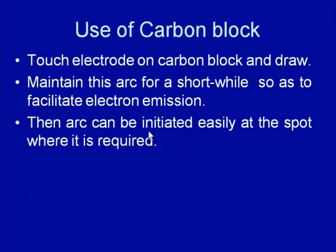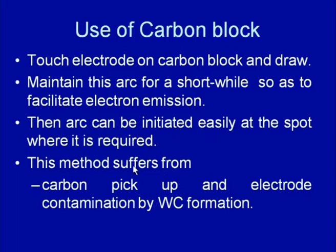Once electrons are emitted, the arc can be ignited easily at the desired spot. However, this method is not foolproof and suffers from the problem of carbon pickup and electrode contamination. When the tungsten electrode touches the carbon block to complete the circuit and initiate the arc, the heat generated causes slight melting of the electrode tip, leading to carbon being picked up from the block to the electrode tip, causing electrode contamination by formation of tungsten carbide.